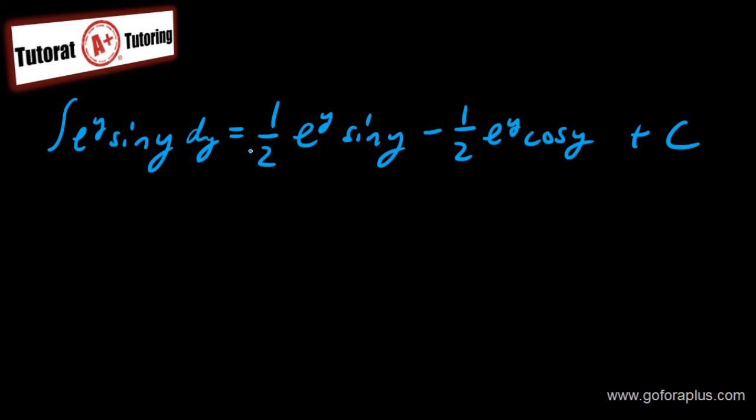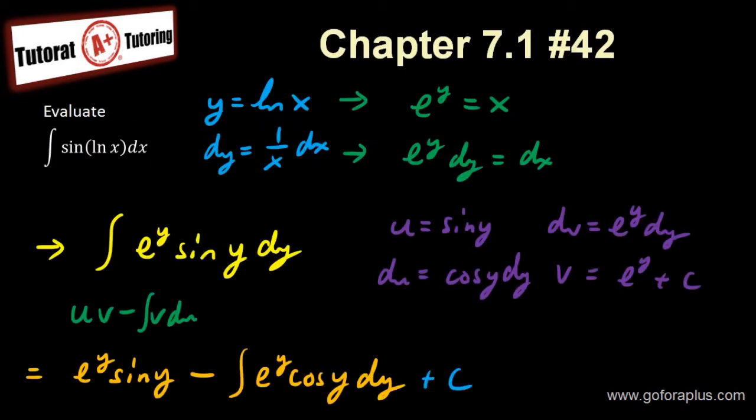So I know that integral of e to the y sine of y equals one half e to the y sine of y minus one half e to the y cos of y plus c. So this is basically my answer for this integral. But this integral, I have to go back and put it back with the x.